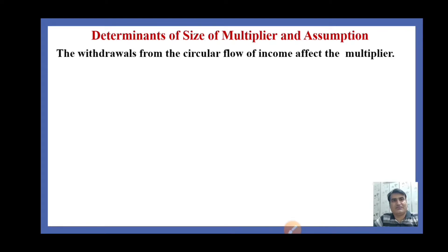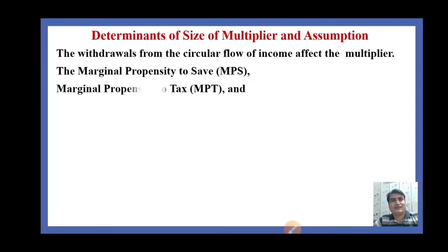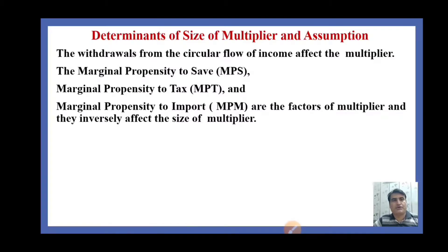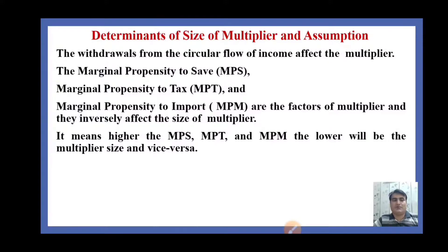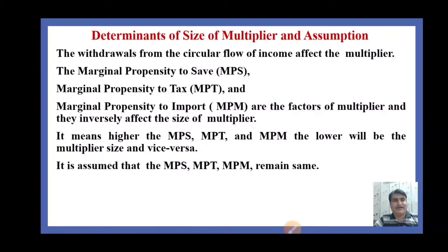What are the factors which affect the size of the multiplier? The withdrawals from the circular flow of income affect the multiplier. The marginal propensity to save (MPS), the marginal propensity to tax (MPT), and the marginal propensity to import (MPM) are the factors of the multiplier, and they inversely affect its size. Higher MPS, MPT, and MPM will result in a lower multiplier size, and vice versa. It is assumed that MPS, MPT, and MPM remain the same.